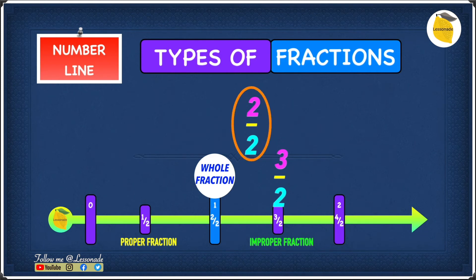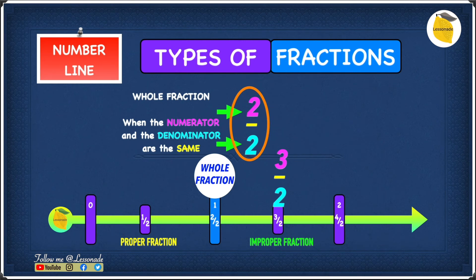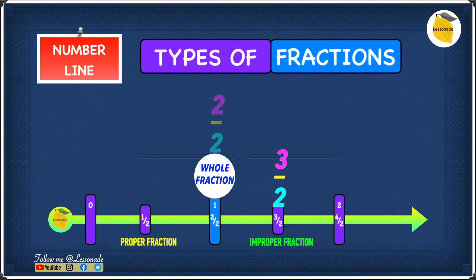Now let's have a look at 2 over 2. The numerator is 2 and the denominator is also 2 — they're the same, so 2 over 2 is a whole fraction. A whole fraction is when the numerator and the denominator are the same. On the number line, 2 over 2 goes right where the whole fraction is.